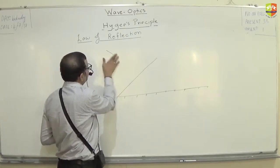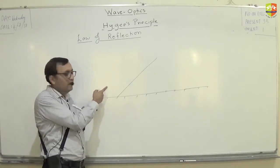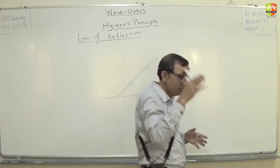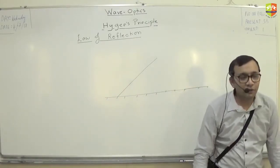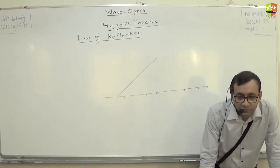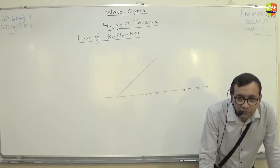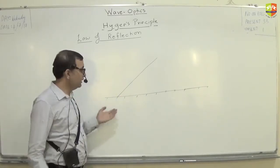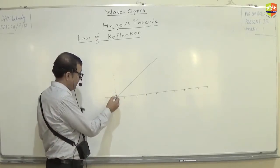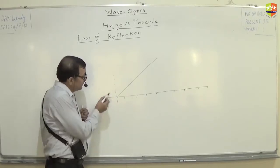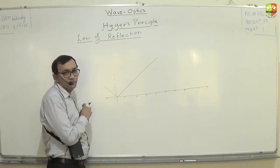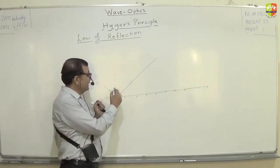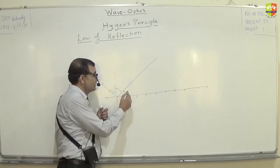This is the incident wavefront. Can you show where the angle of incidence is? How do we define the angle of incidence? It is the angle between the incident ray and the normal. The normal is perpendicular to the mirror surface. The incident ray is the direction of velocity, which is perpendicular to the wavefront. So this is the incident angle I. If this is I, this angle will be 90 minus I, and this other angle will be I.